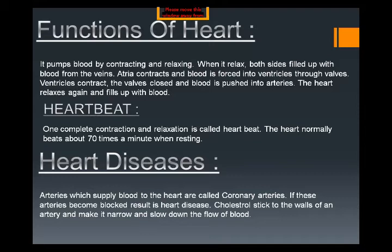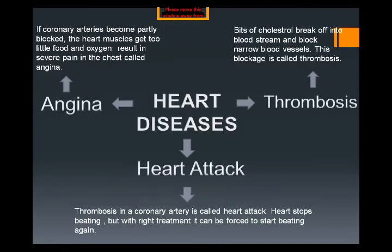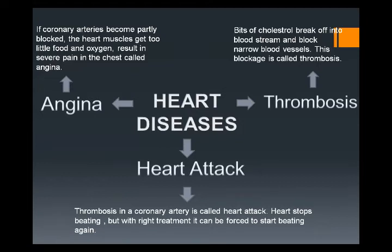Now we are going to look at the different heart diseases: thrombosis, angina, and heart attack. Angina is also called a mild heart attack. In angina, the coronary artery — which supplies food and oxygen to the heart — becomes partly blocked, becoming narrower due to the deposition of fat, so the heart muscles do not get a sufficient amount of food and oxygen. As a result, the patient feels severe pain in the chest.